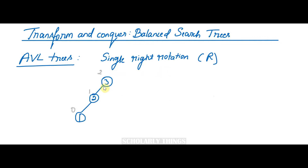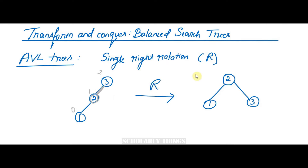Single right rotation involves rotating the edge connecting the root and its left child to the right side. After the rotation, node 2 becomes the root with balance factor 0, node 1 is the left child with balance factor 0, and node 3 is the right child with balance factor 0. Initially, upon adding node 1, the balance factor of the root changed to +2, so after performing the single right (R) rotation, the AVL tree is now balanced.